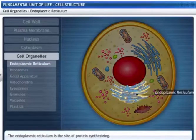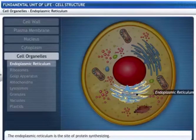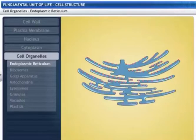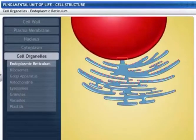This is the protein synthesizing site of the cell, called the endoplasmic reticulum. It is an irregular network of double tubular membrane, continuous with the nuclear membrane on the inside.